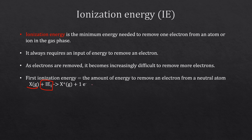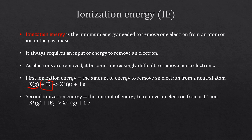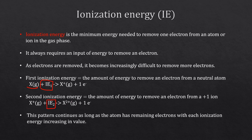The second ionization energy, IE2, is the energy to remove a second electron — that is, to remove an electron from a plus-one ion. We start with the plus one, add IE2, and get a plus-two ion and another electron. This pattern continues as long as the atom has remaining electrons, with each successive ionization energy increasing in value: IE2 > IE1, IE3 > IE2, and so on.